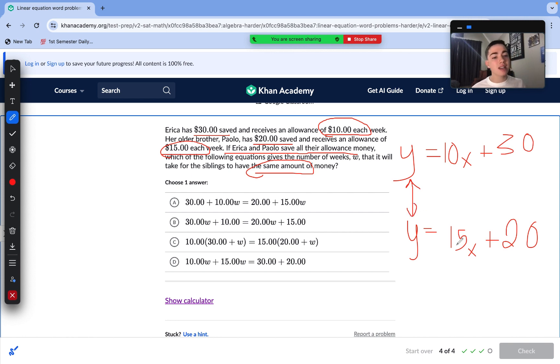We can just set the equations equal to each other. We are left with 10X plus 30 equals 15X plus 20. And, of course, the variable won't always be X. They're using W here. So, we just substitute out our X for the W value. We are left with answer choice A.